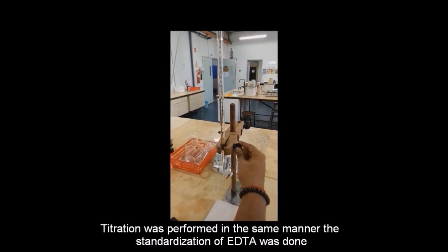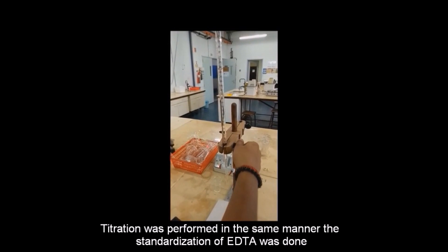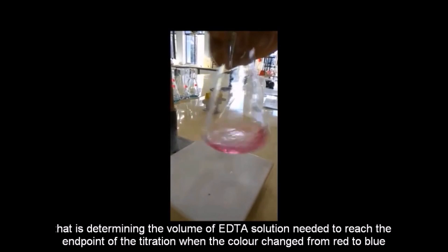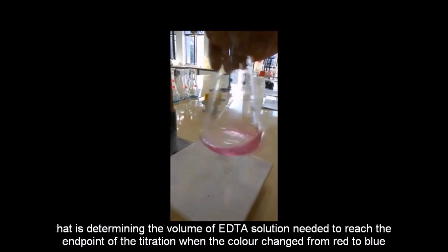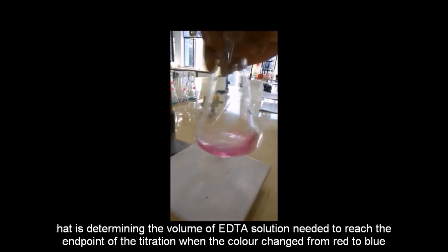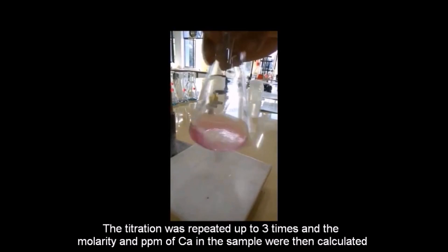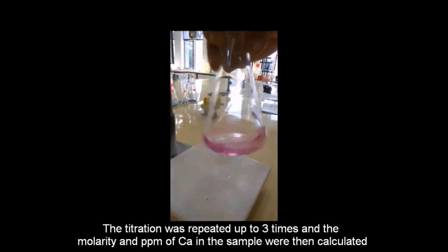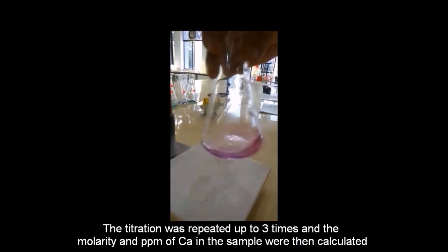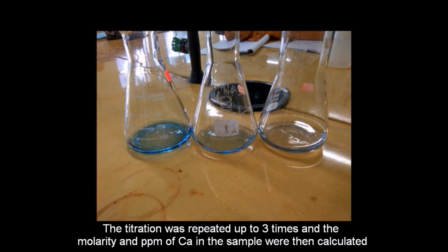Titration was performed in the same manner the standardization of EDTA was done, that is determining the volume of EDTA solution needed to reach the endpoint of the titration, when the color changed from red to blue. The titration was repeated up to three times, and the molarity and parts per million of calcium in the sample were then calculated.